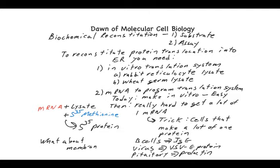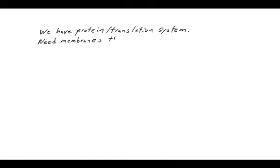What do we do about the membrane component of the system? We have the protein translation system. We need membranes that will translocate proteins in vitro. The question is, where do you get a source of membranes that are highly competent for protein translocation, for the ability to move a protein from the exterior into the interior of the ER membrane? Most cells have ER.